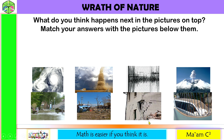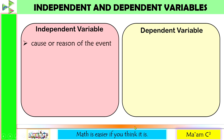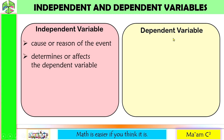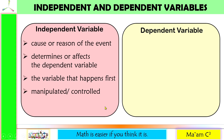This activity is related to our lesson today: independent and dependent variables. The independent variable is the cause or reason of the event. It determines or affects the dependent variable. It is the variable that happens first. In research, it is sometimes called the manipulated or controlled variable, and the independent variable can stand alone.